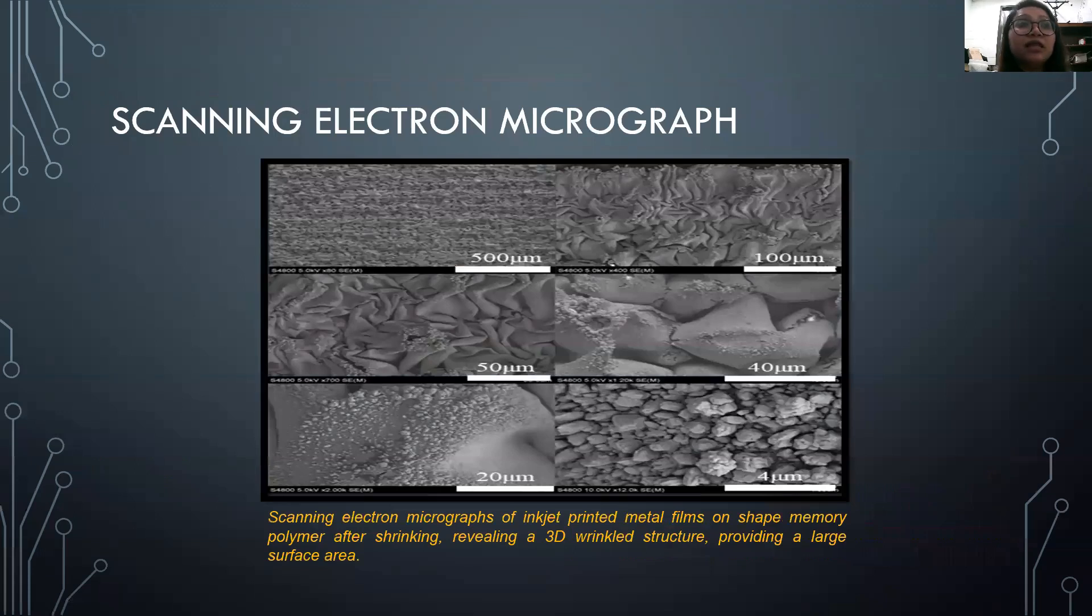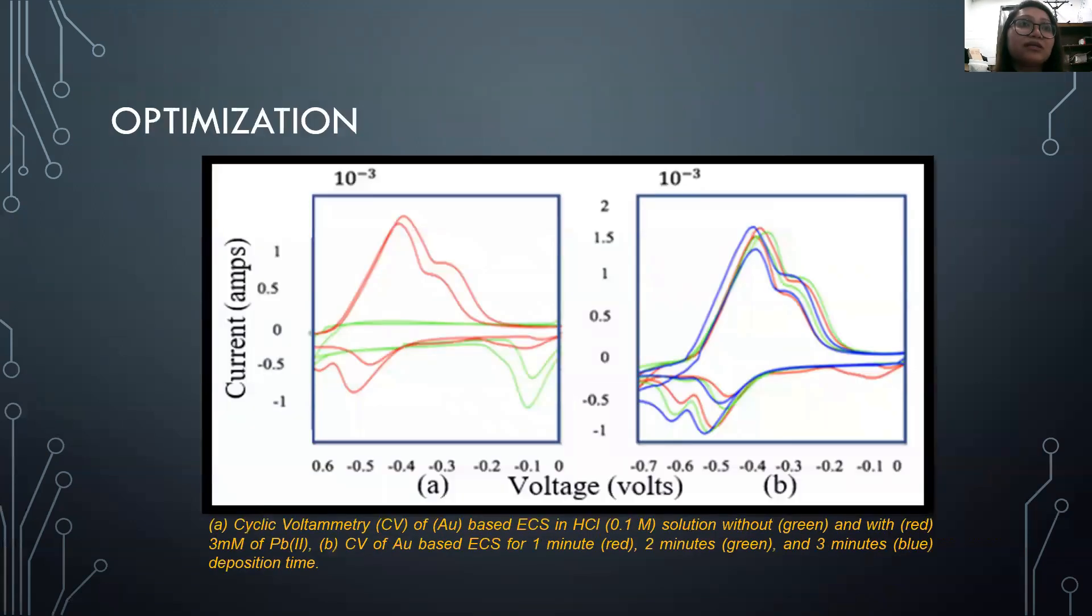In this slide, we can observe the scanning electron micrograph images for our fabricated sensor. It is observed from these pictures that the 3D topology of the material is tangled, twin twisted, serpentine, and squeezed in vertical direction, which supports the claims that we have made earlier about having increased effective electrode surface area even after miniaturizing the device.